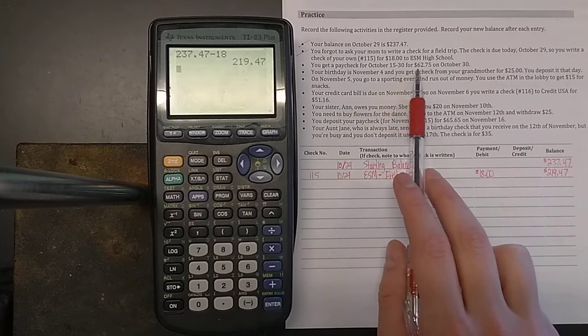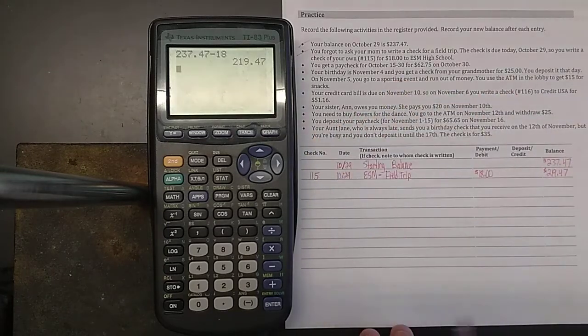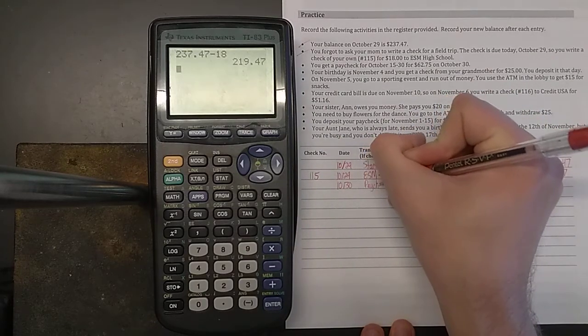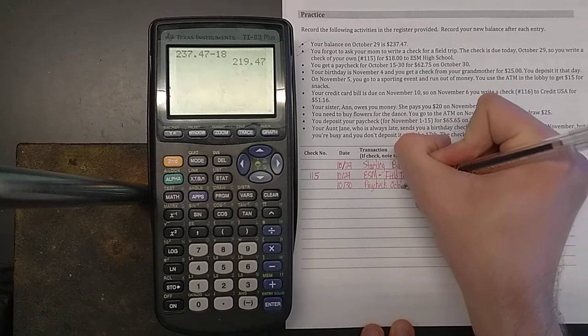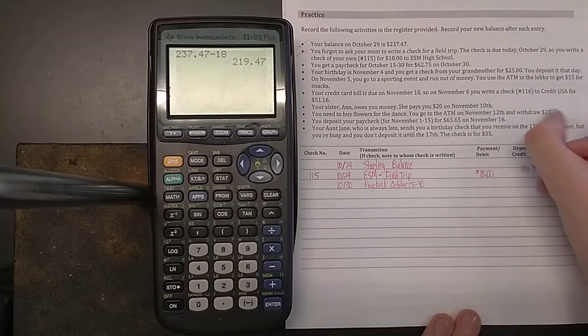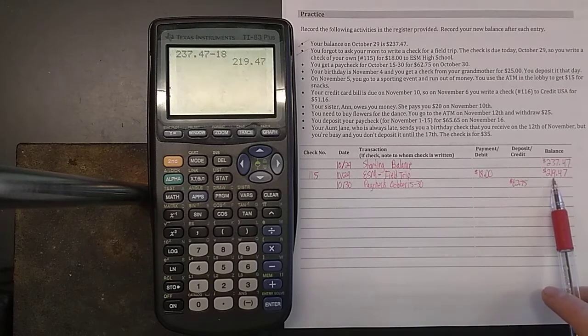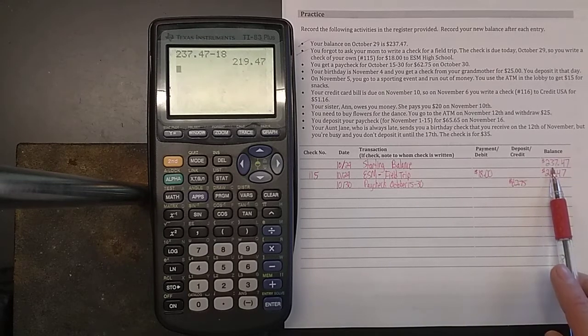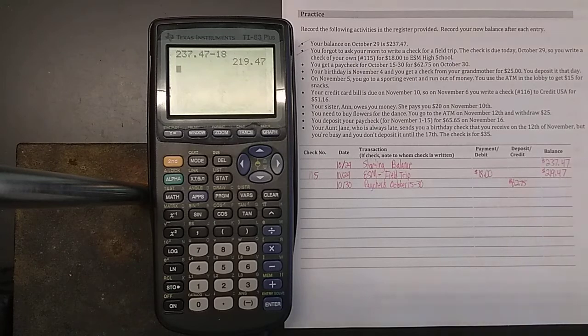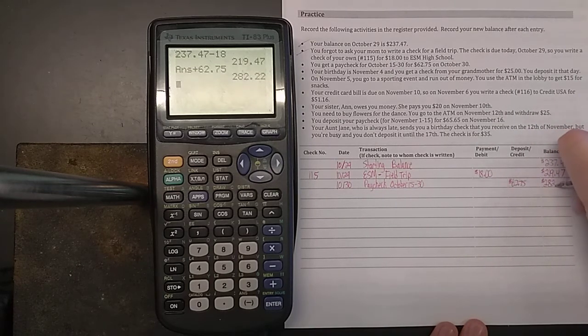You get a paycheck for October 15th through 30th for $62.75 on October 30th. So this isn't a check number that you're writing. So you don't have to write in check number, but this is October 30th. So 10/30. And we're going to write in paycheck. And we'll even write in when the paycheck was. Paycheck from October 15th to the 30th. It was a deposit. You're putting money into the account. You're putting $62.75 into the account. So now what you're going to do, your previous balance was $219.47. It wasn't the $237. That's what it was before you wrote the check for the field trip. Now your new previous balance is this $219.47. We're going to add $62.75. And we get $282.22. Your balance went up. You got more money in your account now.